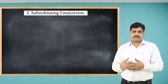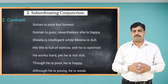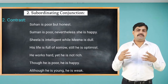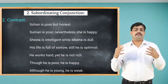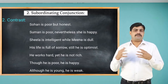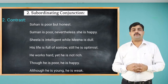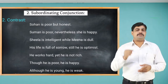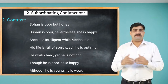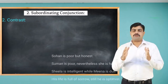To show contrast, we use different conjunctions. For example: 'Sohan is poor but honest.' 'Suman is poor nor worthy less he is happy.' 'Sheila is intelligent while Mina is dull.' 'His life is full of sorrow, still he is optimist.' 'He works hard yet he is not rich.' 'Though he is poor, he is happy.' 'Although he is young, he is weak.' The conjunctions but, while, still, yet, though, and although are all used to show contrast.